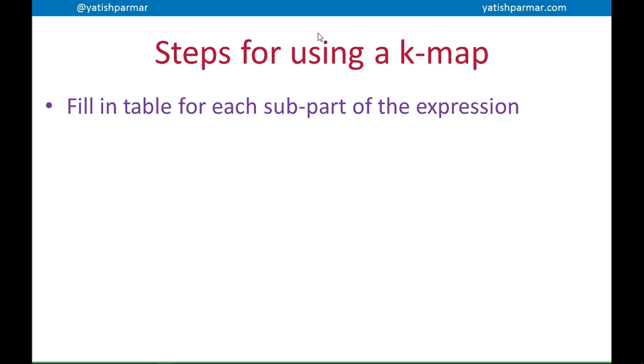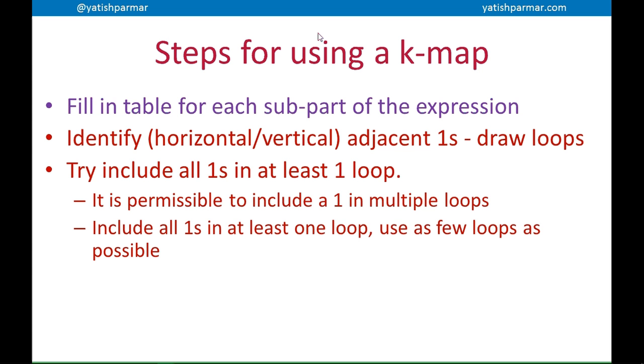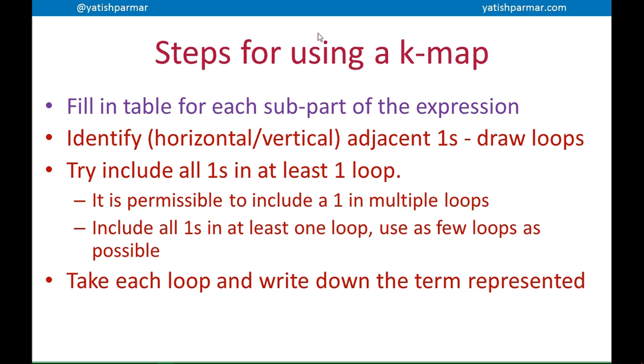So the steps of using K-map: First part is you're filling the table for each sub-part of the expression. Remember each coordinate represents what the output of that part of the expression would be. If it's going to be true, you put in a 1. If it's false, you put in a 0. Next you identify the adjacent ones by drawing loops. They need to be in pairs. You try and include all ones in at least one loop. You can have a 1 in multiple loops. And you want to try and use as few loops as possible. Then you take each loop and write down the term that it represents. Third stage is you OR the loop terms together.